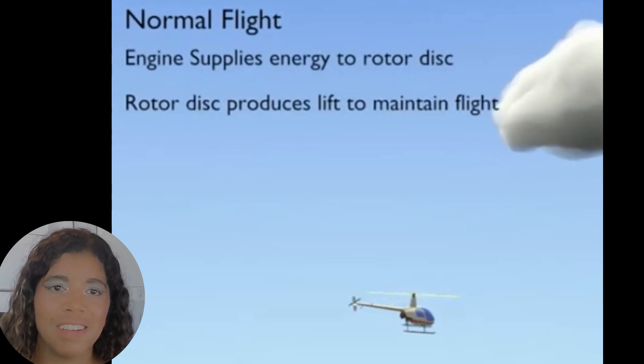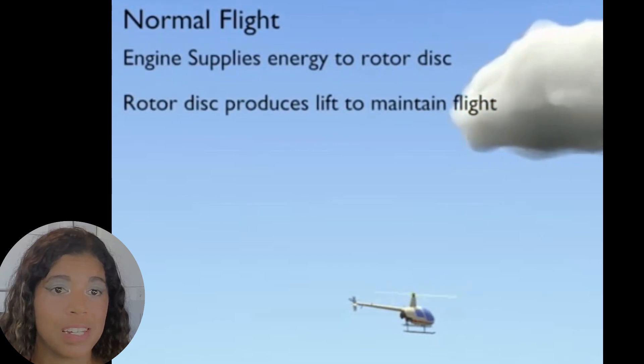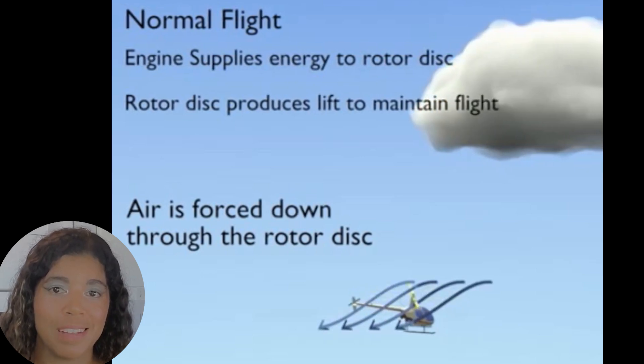In normal flight the engine supplies energy to the rotor disc and the rotor disc produces lift to maintain flight. In this case air is forced through the rotor disc.